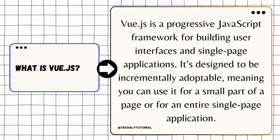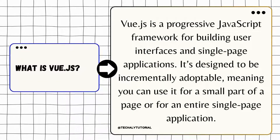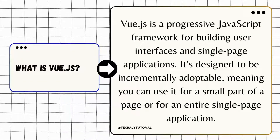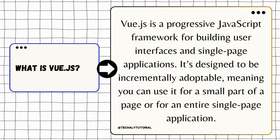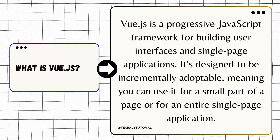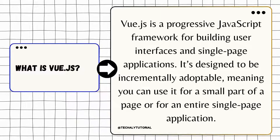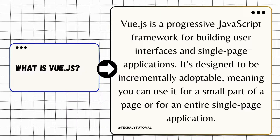What is Vue.js? Vue.js is a progressive JavaScript framework for building user interfaces and single-page applications. It's known for being incrementally adoptable, which means you can use Vue for small parts of a web page or scale up to build entire applications.